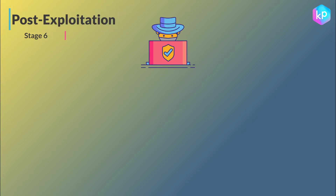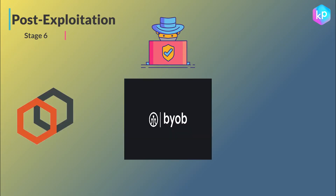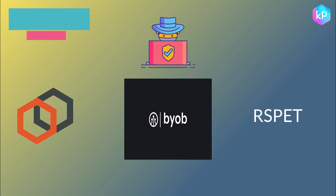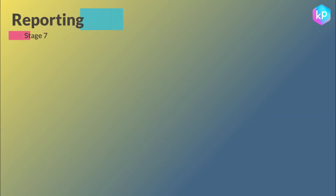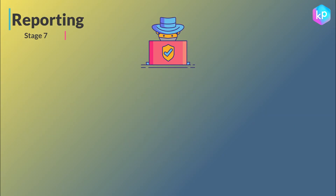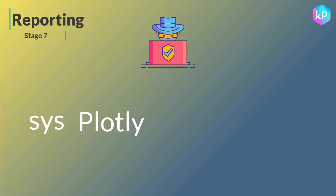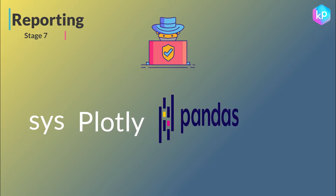Stage 6 — Post-Exploitation: pen testers rely on the Python libraries PyMetasploit3, BYOB, and RSPET. Stage 7 — Reporting: pen testers rely on the Python libraries Sys, Plotly, Pandas, and NLTK.